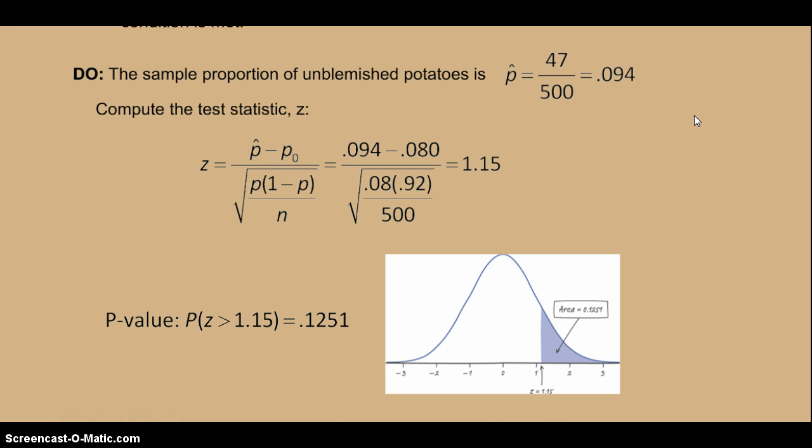That's 0.094. So keep in mind what we have going on here. It's supposed to be that the truck has 8% of blemished potatoes. We got a sample that's 9.4%. Is that all that unusual?